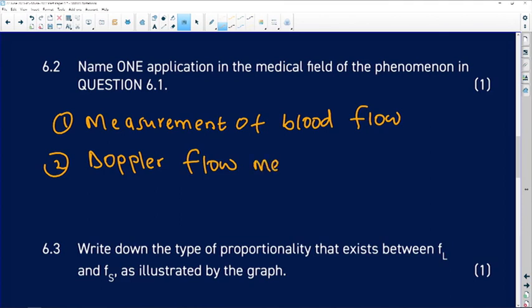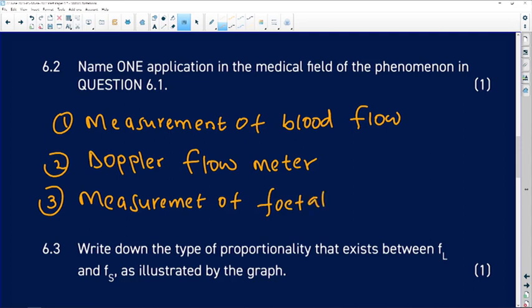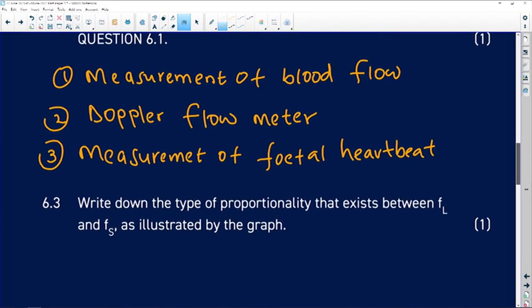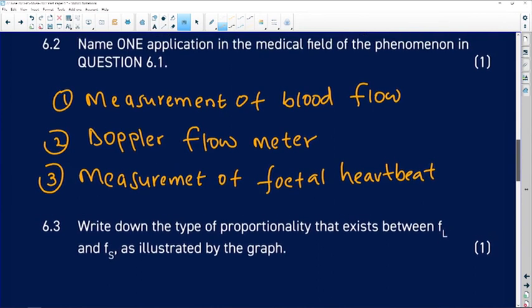We can also have here Doppler flow meter. The third one is also used as a measurement of fetal heartbeat. Okay, so these three here will account in the exam because here it's only one, but you can decide which one is easier for you: measurement of blood flow, Doppler flow meter, and measurement of fetal heartbeat.